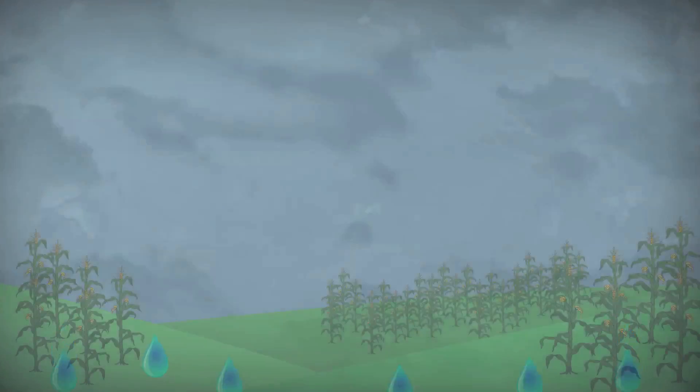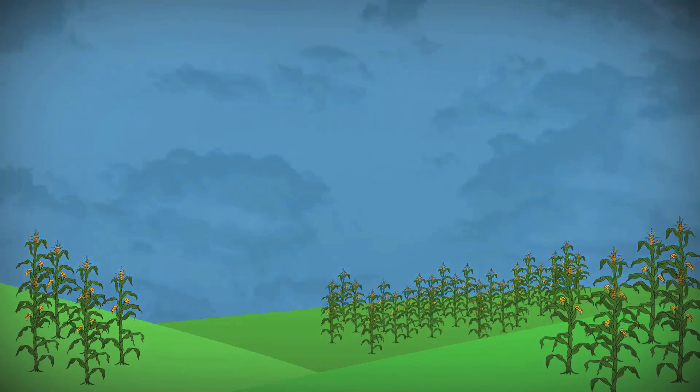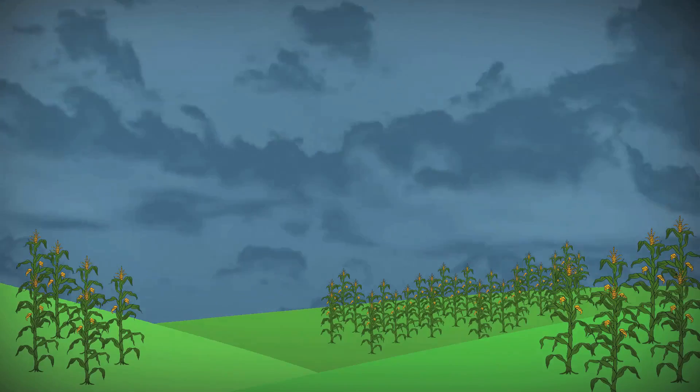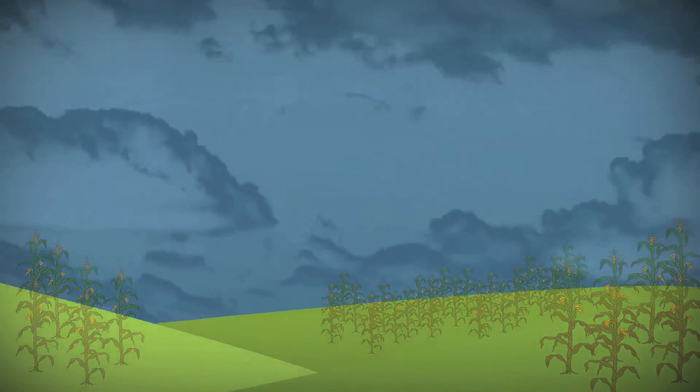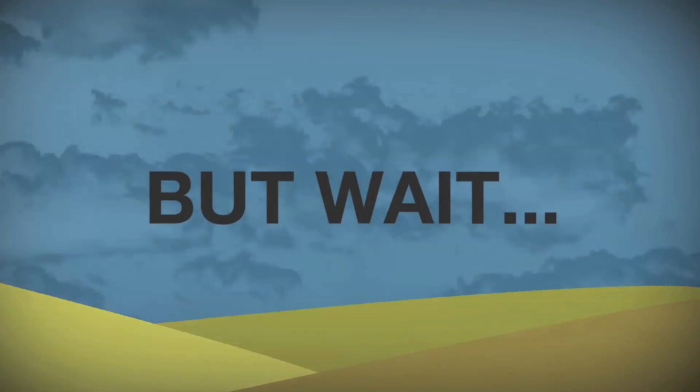Precipitation around the world would drop, and growing seasons in many regions would be significantly shortened, causing crop shortages and famine that would lead to the deaths of hundreds of millions of people worldwide. But wait, it gets worse.